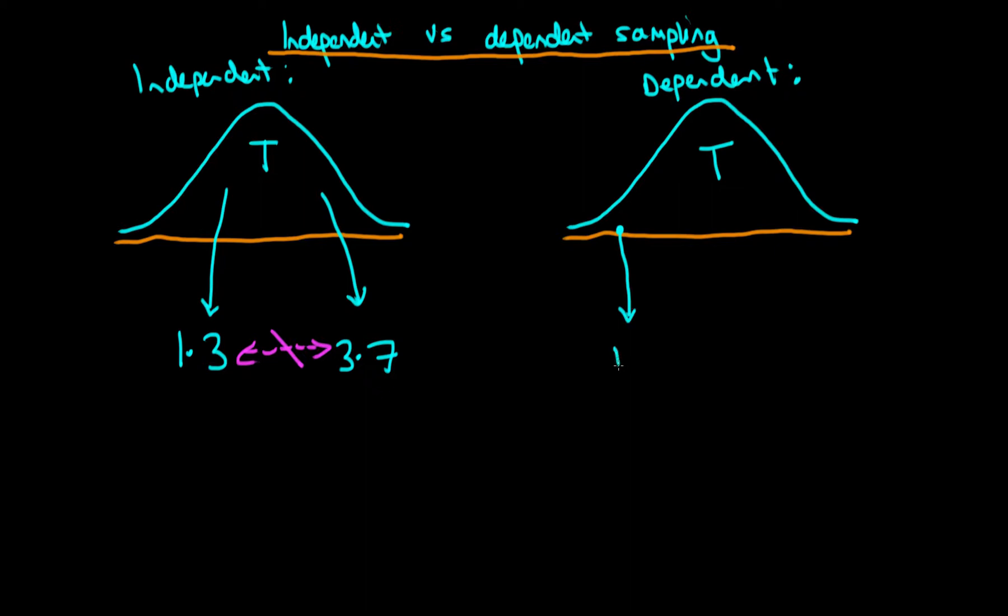Then what we do is we use that location to generate a new sampling point which is somewhere often that's near to that point. So we might generate a value here which is say 2.5.